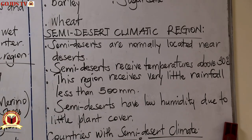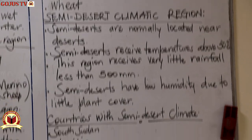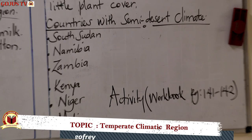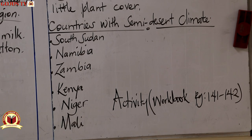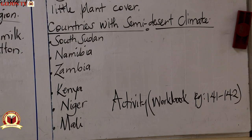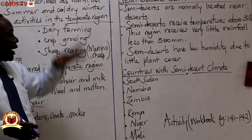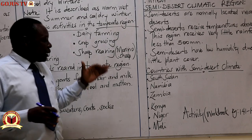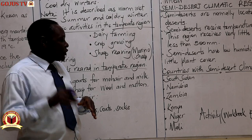Countries with the semi-desert climate include South Sudan, Namibia, Zambia, Kenya, Nigeria, Mali, and others. However, no country in Africa has only that type of climate — it is part of those countries. For example, in South Sudan it is the northern part; in Zambia, only part of the country; in Namibia, part; and in Kenya, the northern part.